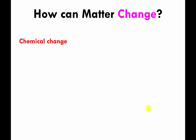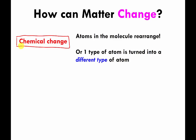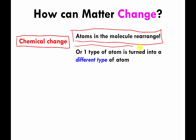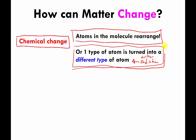The other major type of change, other than physical change, is called a chemical change. There are basically two types of chemical change. The one we're going to spend a lot of time on is when the atoms in a molecule actually rearrange who they are attached to. There's a slightly different type where one type of atom turns into a different type of atom, but we won't talk about that until later in the course when we discuss nuclear radiation.